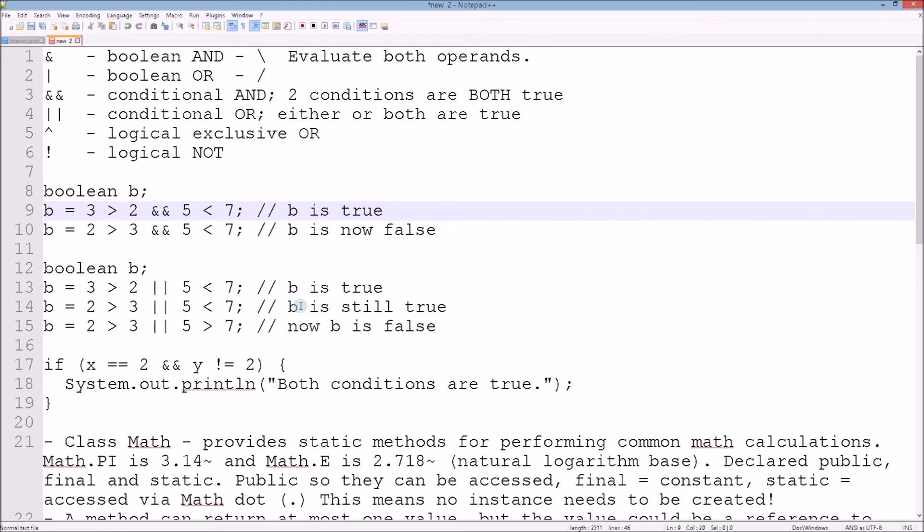We're going to evaluate the conditional AND and OR. First, let's take a look at the first example: boolean b equals 3 greater than 2 conditional AND 5 less than 7. In this case b is true because the statement on the left is evaluated as true.